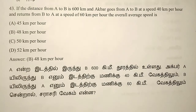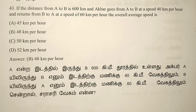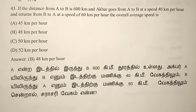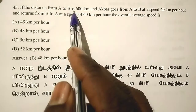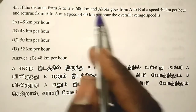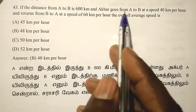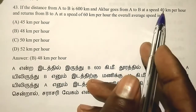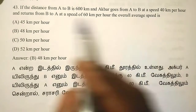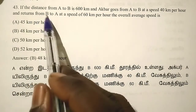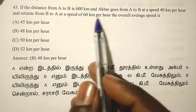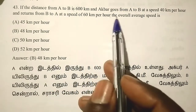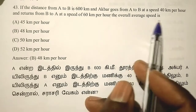Hi friends. This is a very easy question but difficult to find. The question: if the distance from A to B is 600 km, and a bus goes from A to B at a speed of 40 km per hour and returns from B to A at the speed of 60 km per hour, what is the overall average speed?